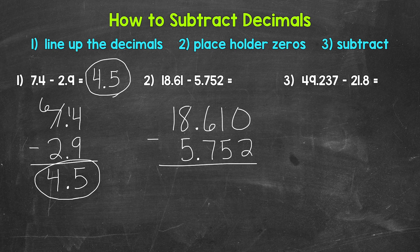So what we need to do is use a placeholder zero so that both of these numbers go to the thousandths place. Now our problem looks more lined up and organized, and we actually need that zero in order to subtract here — we can't just bring that two straight down into our answer. Remember, zeros to the right of decimal digits do not change the value of the number. So 18.610 is equivalent to 18.61, and we're not changing the value of anything here.